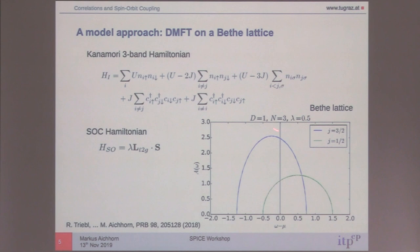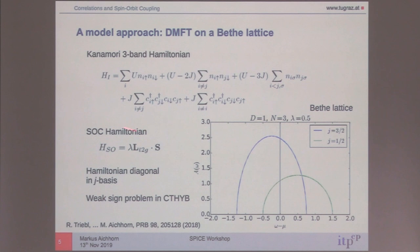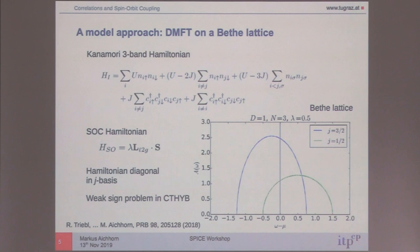This is the spin-orbit Hamiltonian, which couples the orbital and spin degrees of freedom, formulated in the original cubic harmonics and the original spin. The spin-orbit coupling Hamiltonian is diagonal in the so-called J basis. When people talk about J-effective one-half and J-effective three-half, it's nothing else than the basis transformation that diagonalizes this Hamiltonian, giving you a diagonal representation of these states. We have to do this in practice.